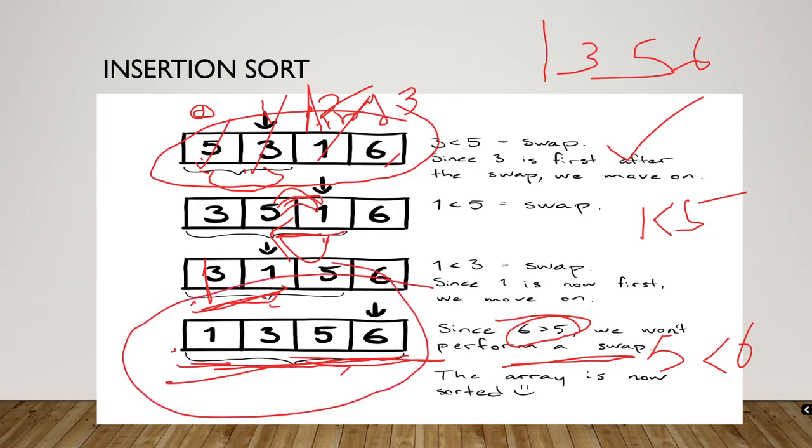Now check whether the numbers are in ascending order: 1, 3, 5 and 6. Yes, the numbers are arranged. So now insertion sort has been performed successfully. This is for insertion sort. Now we will look at the algorithm for insertion sort. I hope this is very clear, it's very easy to understand also.